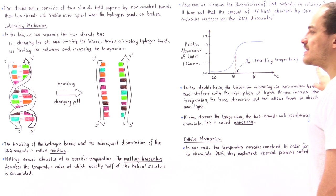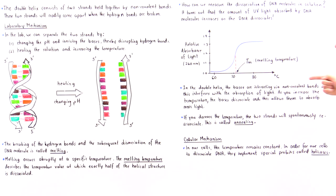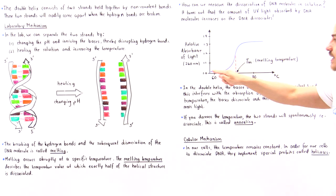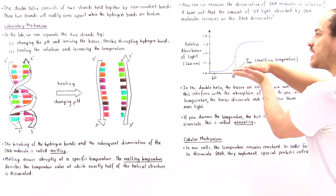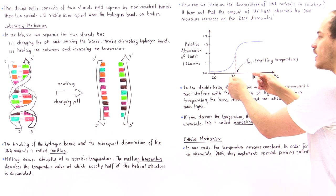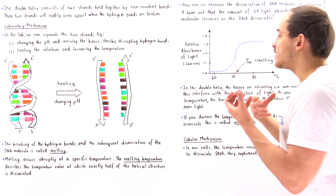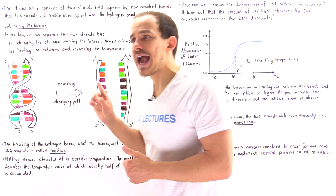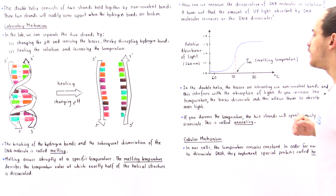The x-axis is temperature in Celsius, and as we go from left to right, we heat our solution. The experimental data gives us a curve showing an abrupt change in relative absorbance at a specific temperature value. That's exactly why we call this process melting — it describes the very quick dissociation of the DNA molecule at a specific temperature, which is about 72 degrees Celsius, the melting temperature shown in the diagram.